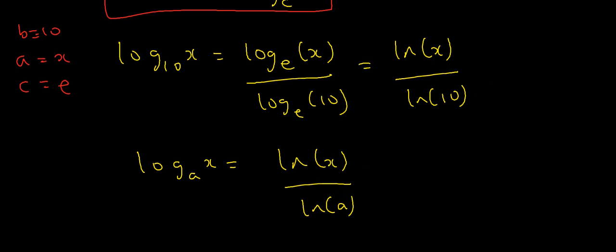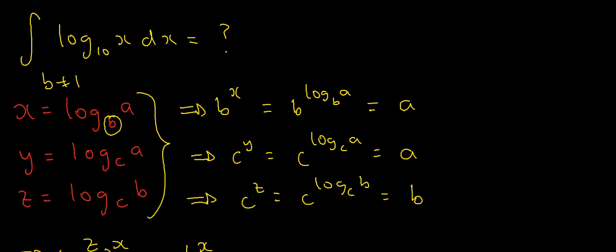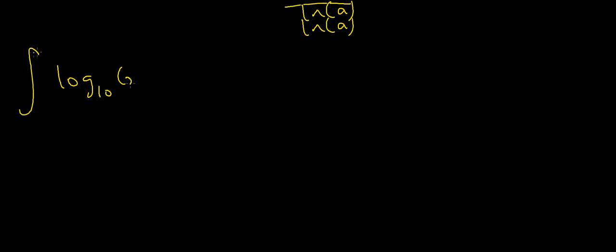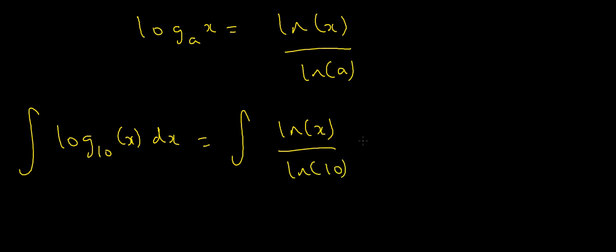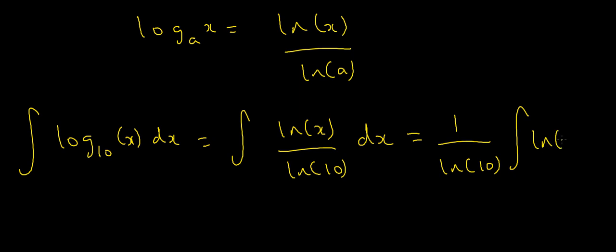So how does this help with the integral? The title of this video is how to integrate log base 10 of x. Using the change of base formula, I can write the integral of log base 10 of x as the integral of ln(x) divided by ln(10) with respect to x. Since ln(10) doesn't depend on x, it's a constant I can take outside the integral: 1 over ln(10) times the integral of ln(x) dx.